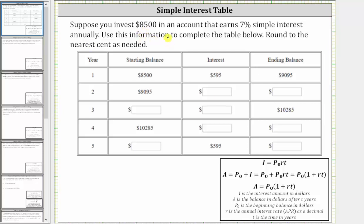Suppose you invest $8,500 in an account that earns 7% simple interest annually. Use this information to complete the table below, round to the nearest cent as needed.